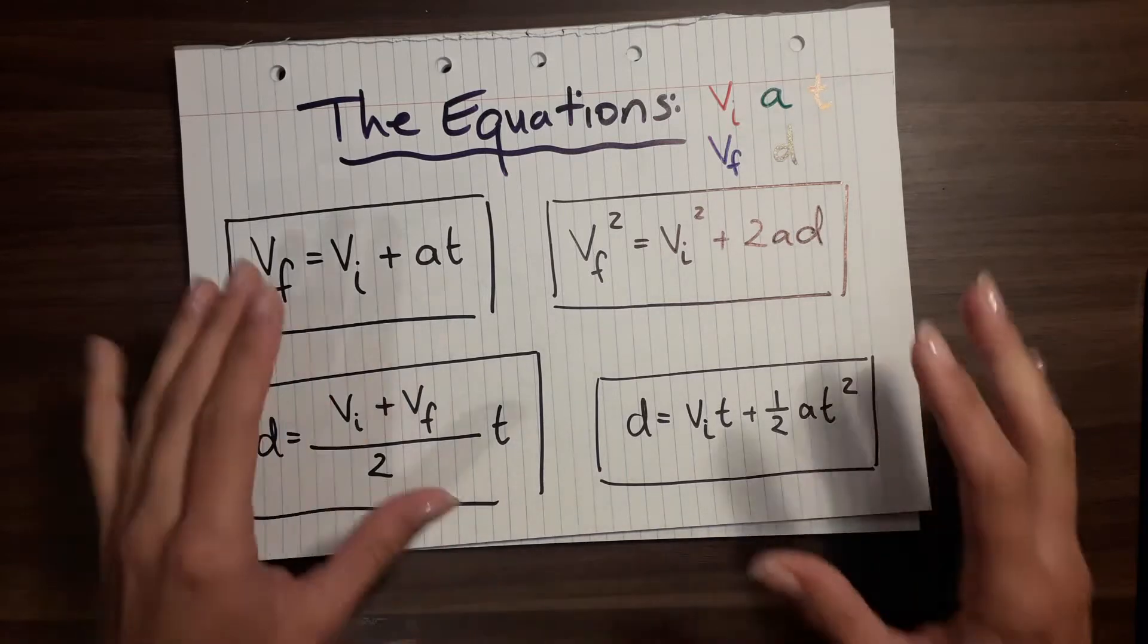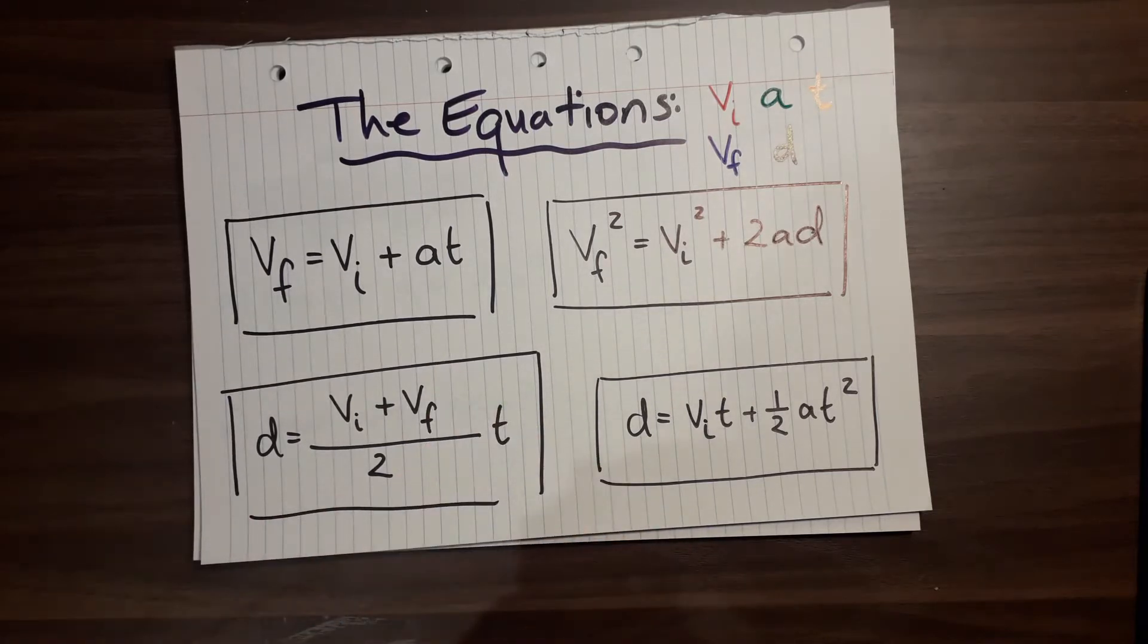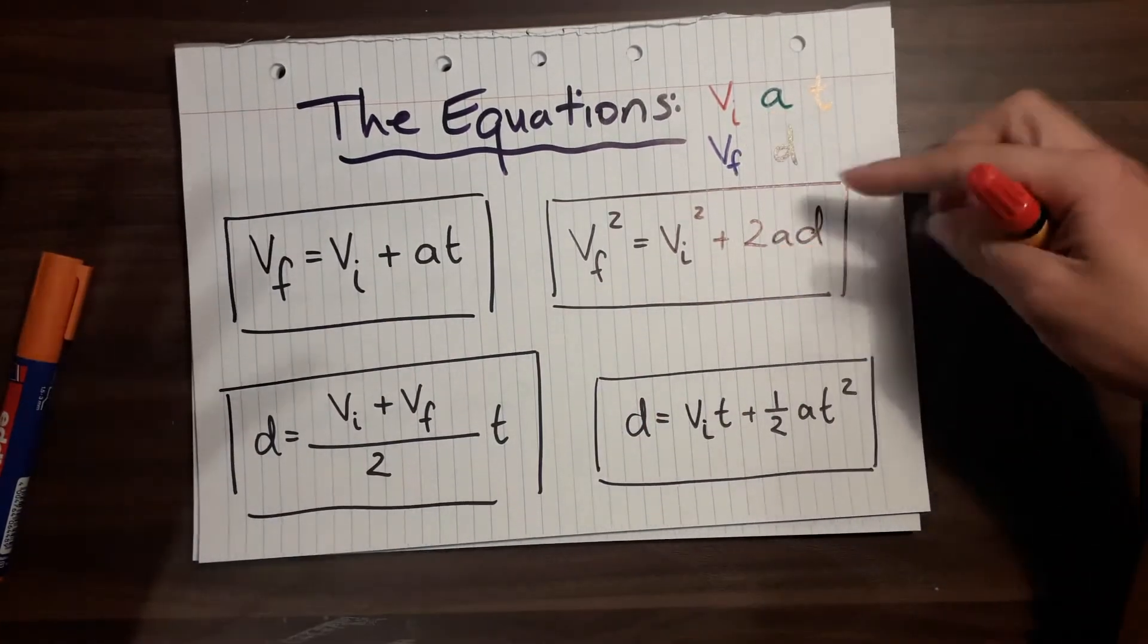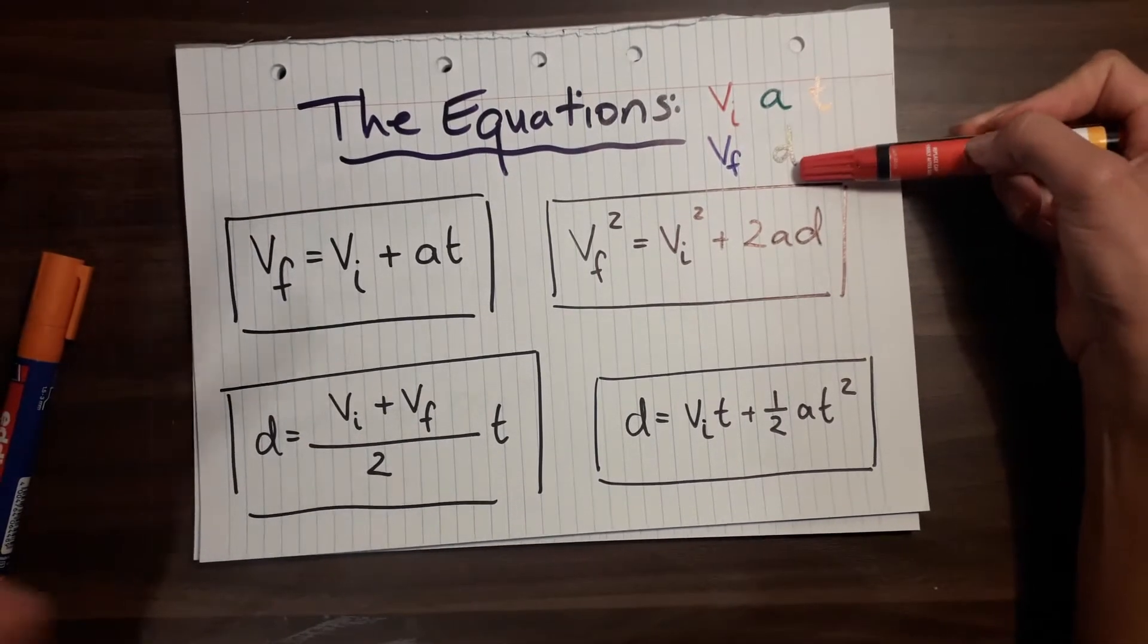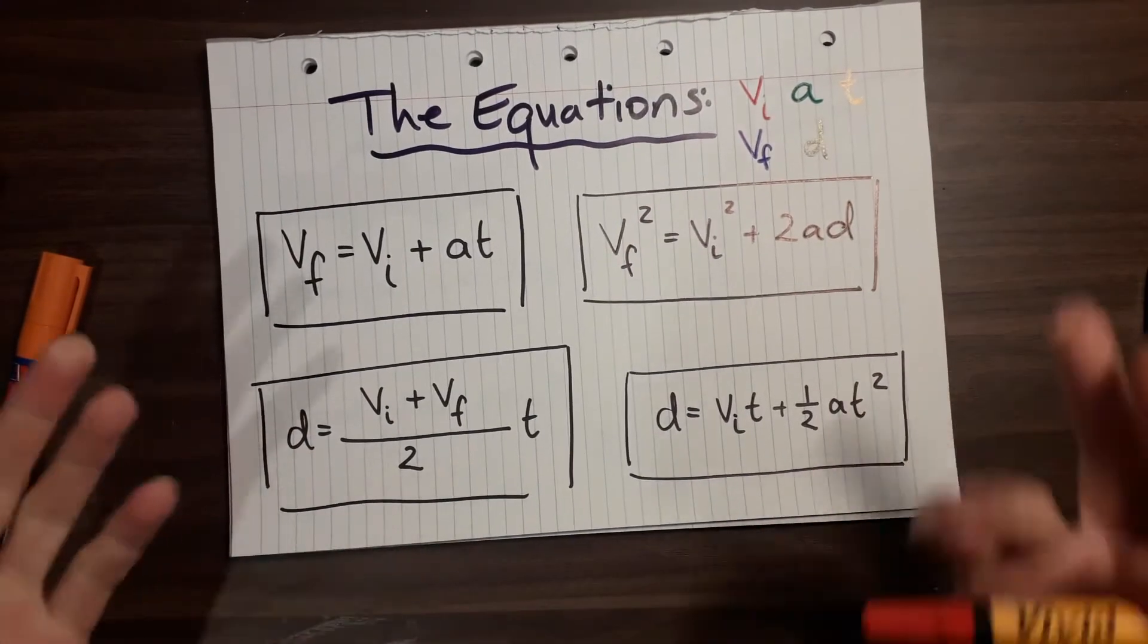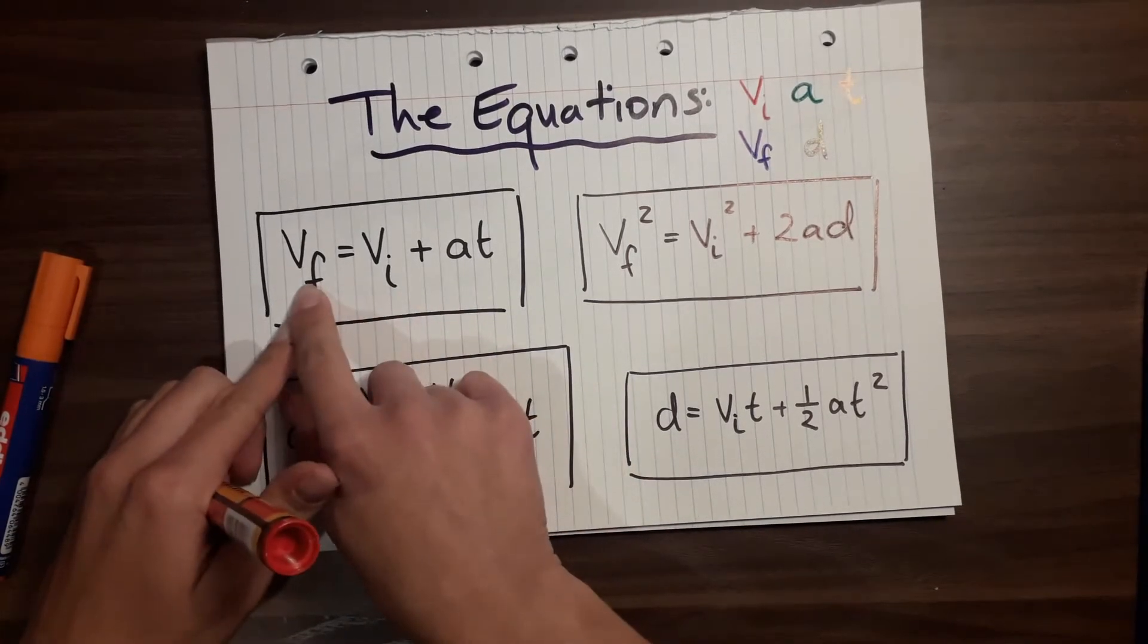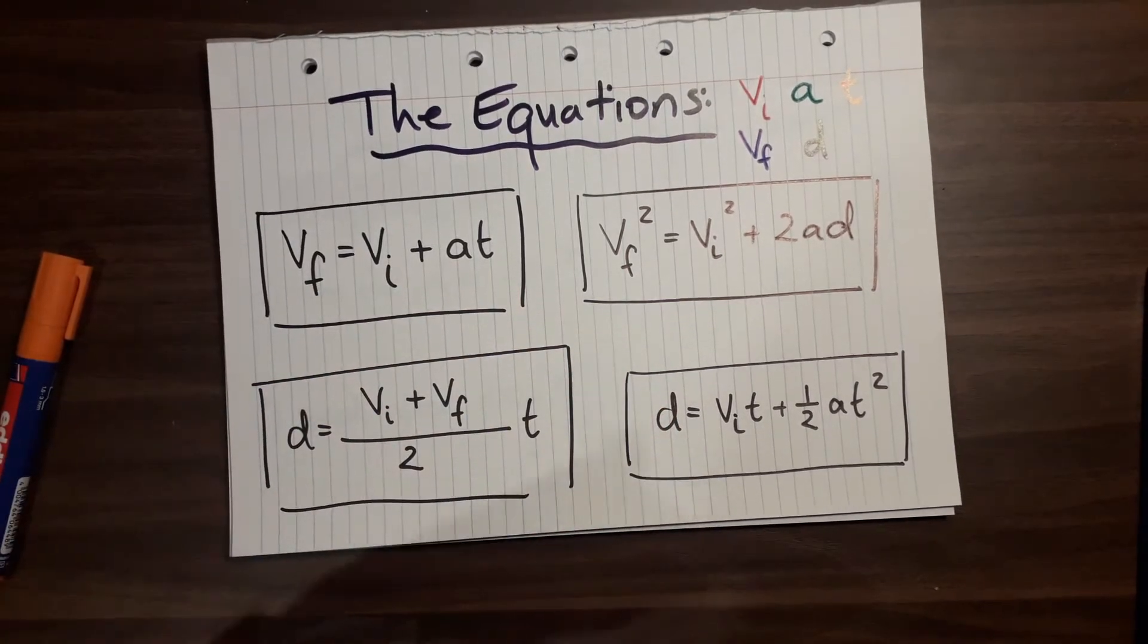Do not worry about where they come from. These are the kinematic equations that you are given in your exam - they are going to be in your resource sheet, you're always going to have them. You may notice that all of these equations have some of these things: initial velocity and final velocity, acceleration, distance or displacement, and time. So if we look at this one here, you can see it has final velocity, initial velocity, acceleration and time - so that one's actually missing distance.